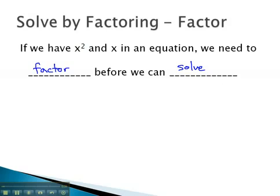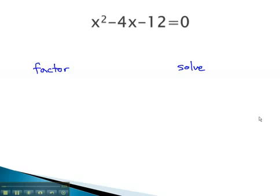If the factors are equal to zero, then one of the factors must be zero.